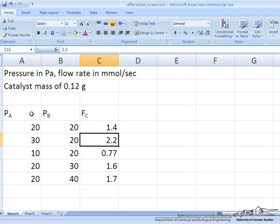And then for the first, fourth, and fifth data points, Pa is constant at 20 Pa, and Pb is what we're varying across different values, measuring the flow rate of C.